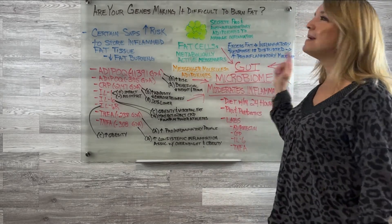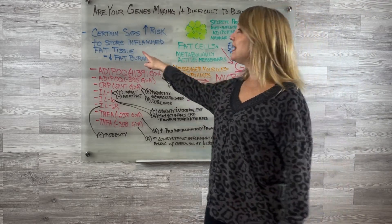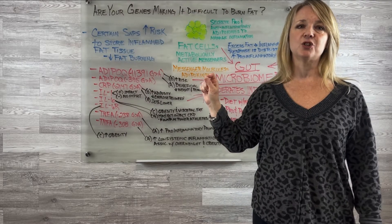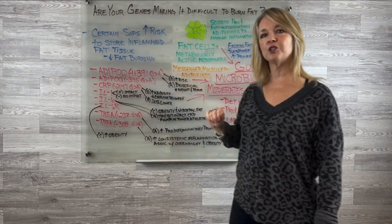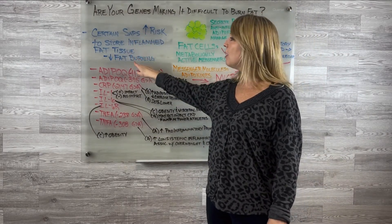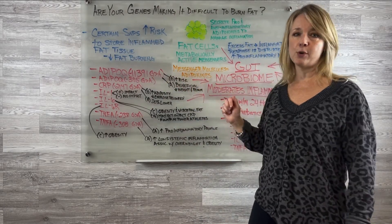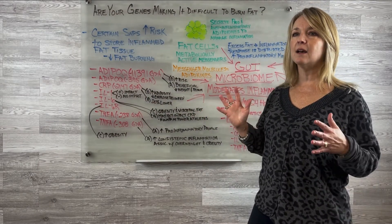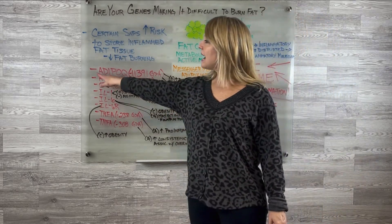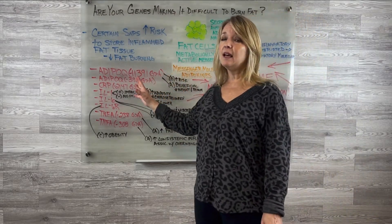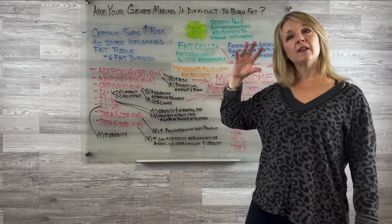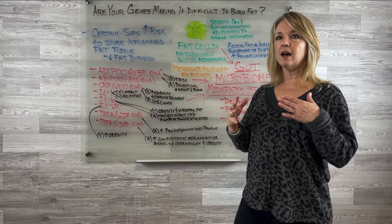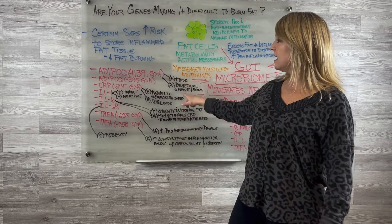So are your genes making it difficult to burn fat? Certain genetic SNPs increase your risk to store inflamed fat tissue. So inflamed fat tissue is kind of a key thing I want you to remember. Whenever you have these certain SNPs, you are going to have a lower fat burning. So some of these, I'm not going to go into detail of all of them, but I'm going to give you some highlights of each of them so you kind of get a picture.